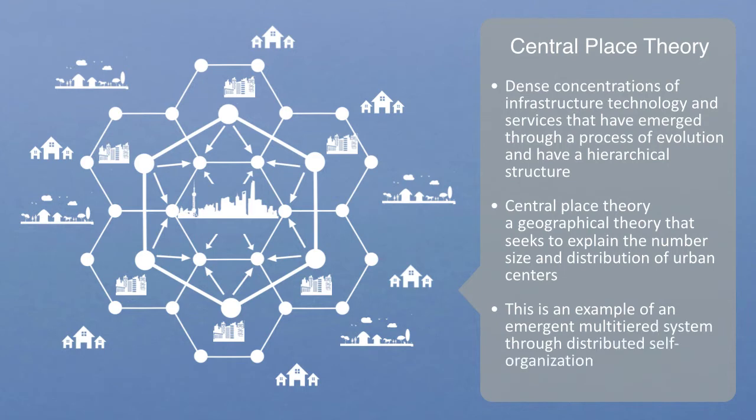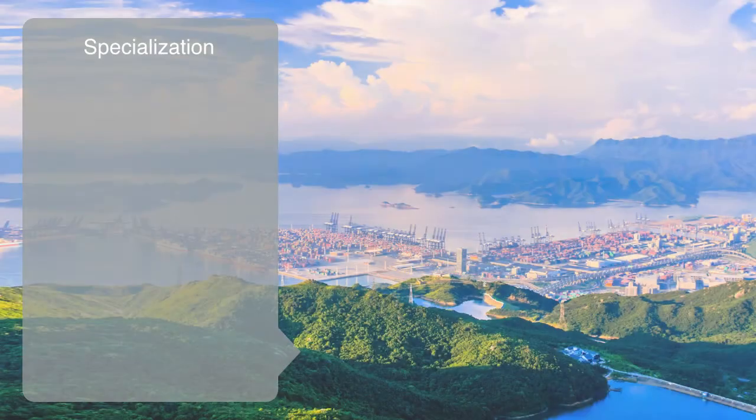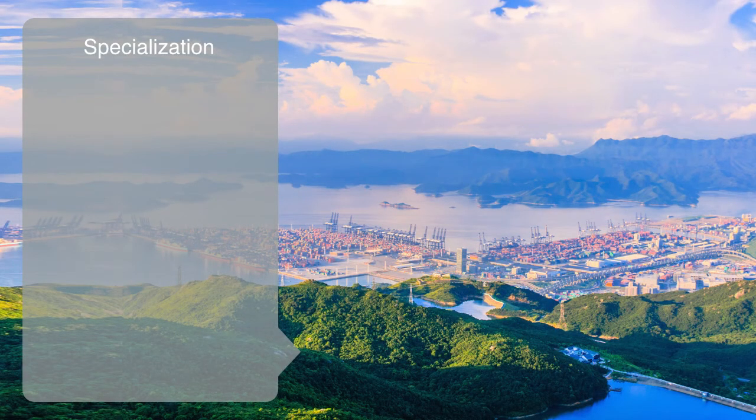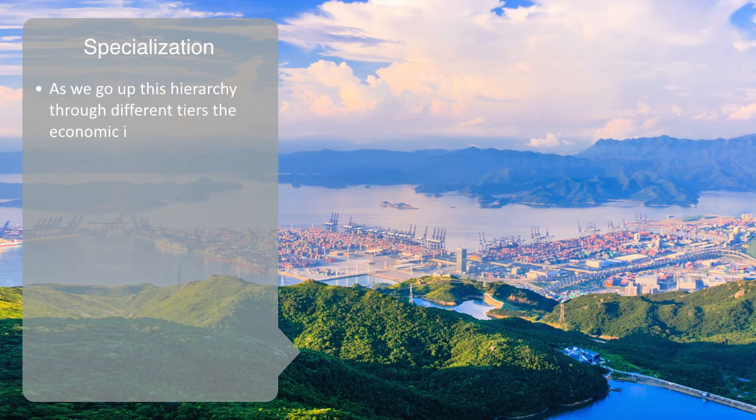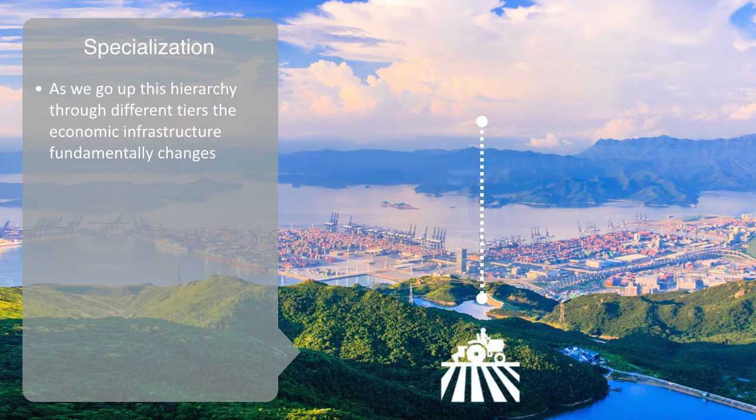As we go up this hierarchy, through different tiers, the economic infrastructure fundamentally changes. From serving the function of primary production, to manufacturing, to services, information, and knowledge activities.